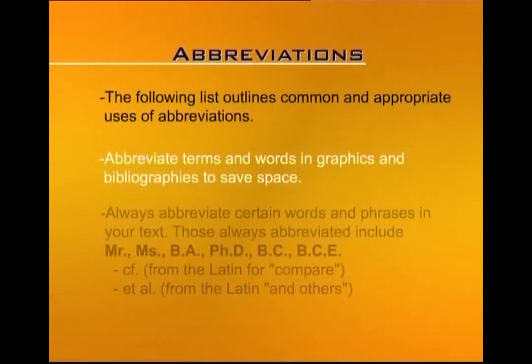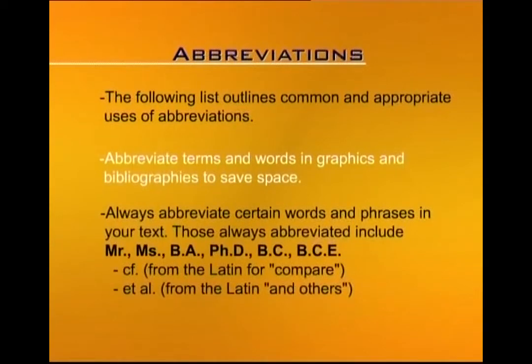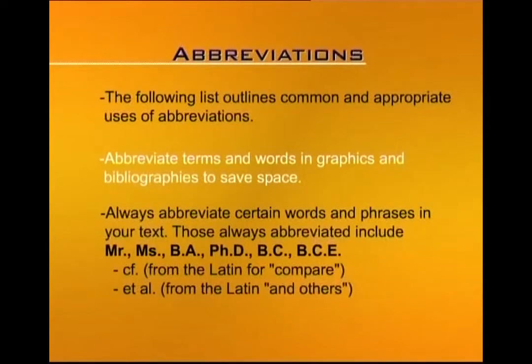Here is a list of common and appropriate uses of abbreviations. You will abbreviate terms and words in graphics and bibliographies to save space. You will always abbreviate certain words and phrases in your text, including Mr., Miss, BA, PhD, BC, BCE, cf. (from the Latin word compare), and et al. (from Latin, meaning 'and others'). You will also abbreviate standard units of measure — for example, writing km for kilometers. Lists of common units of measure can be found in most textbooks and dictionaries.